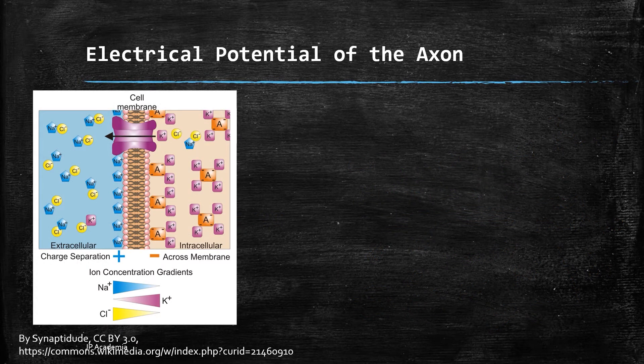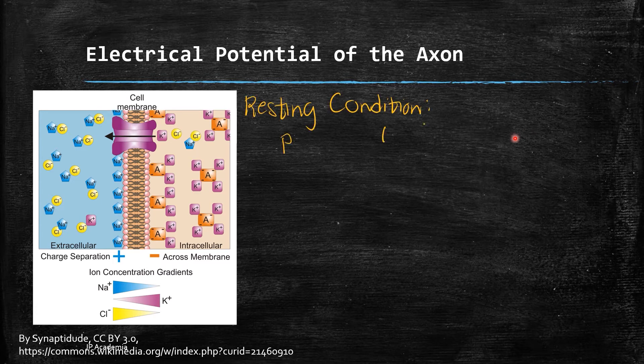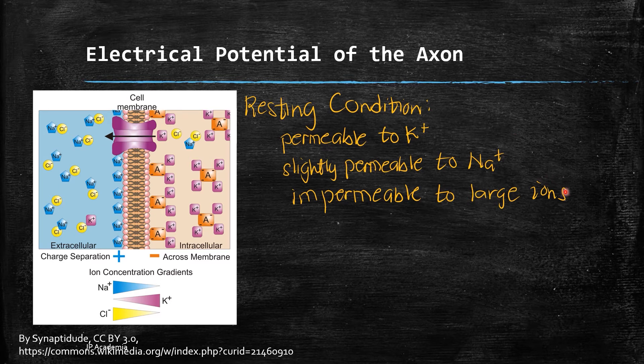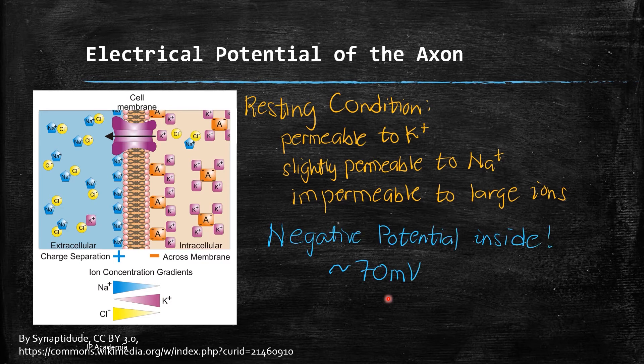If the axon does not conduct an electrical pulse, the membrane is highly permeable to potassium ions while it is slightly permeable to sodium ions. In addition, the membrane is impermeable to large ions. Therefore, there are more potassium ions going out of the axon compared to those entering. This produces a negative potential inside the axon relative to the outside environment. This has the value of about -70 millivolts, which is known as the resting potential.